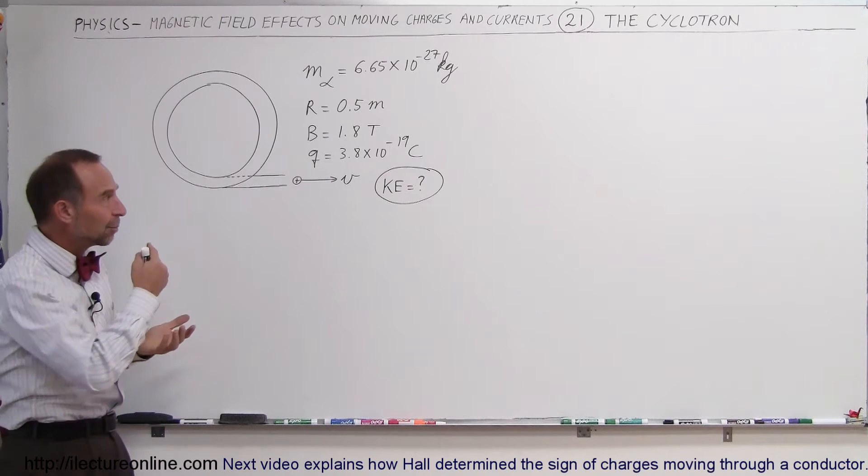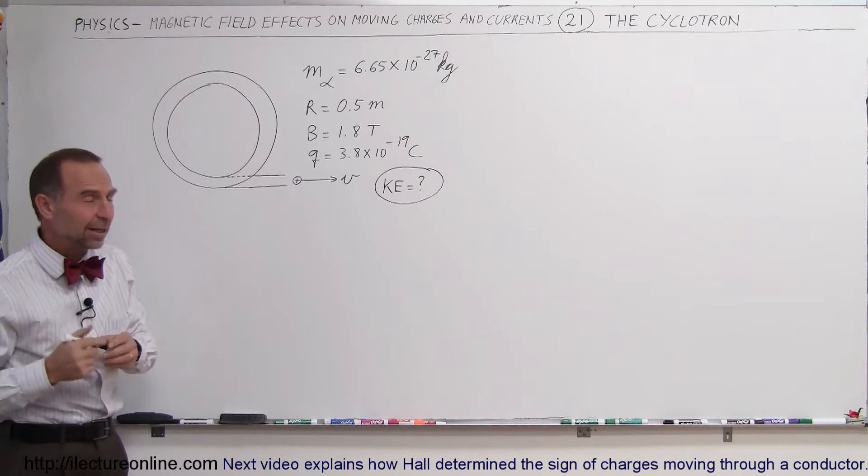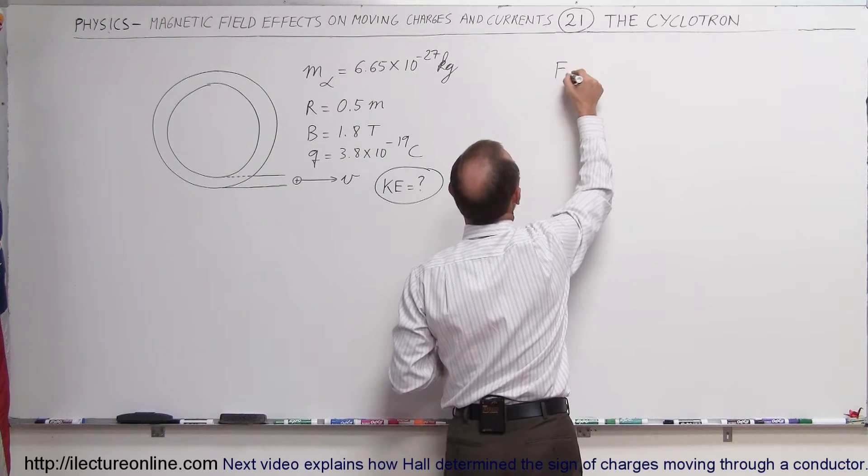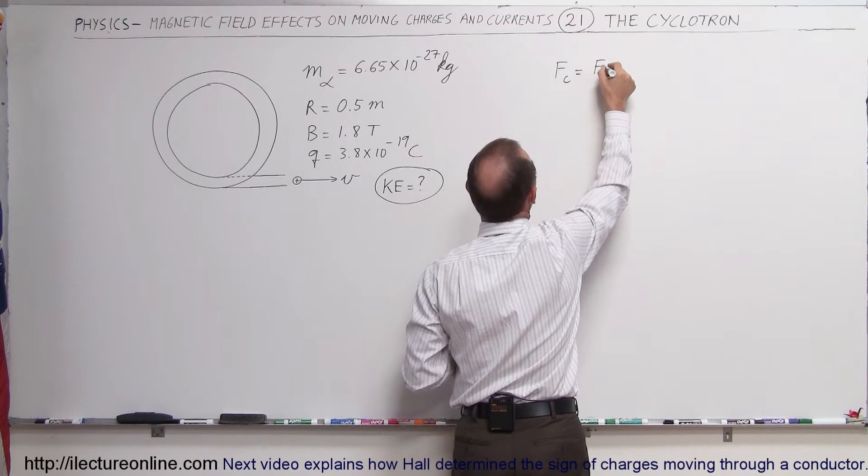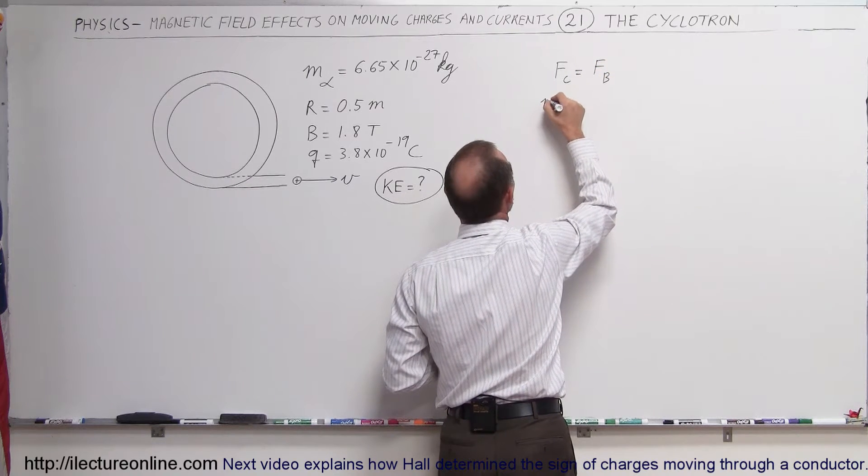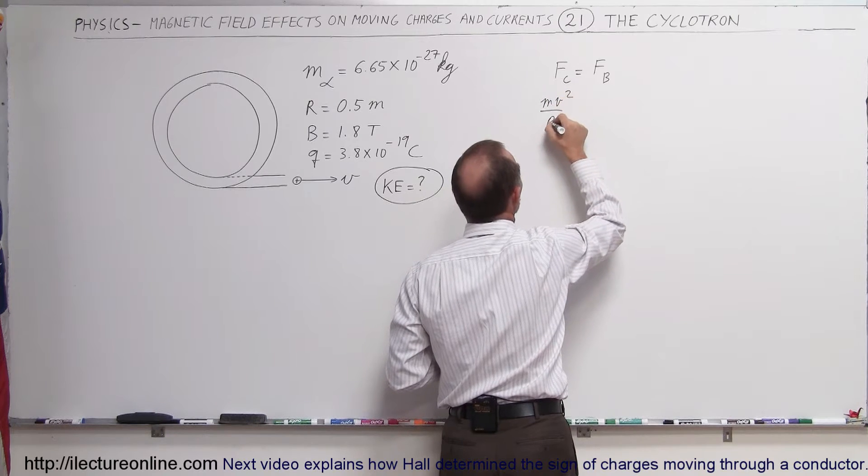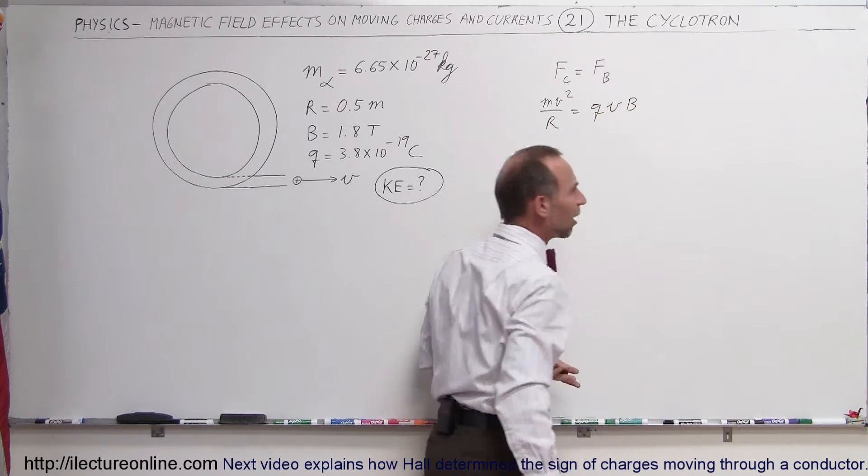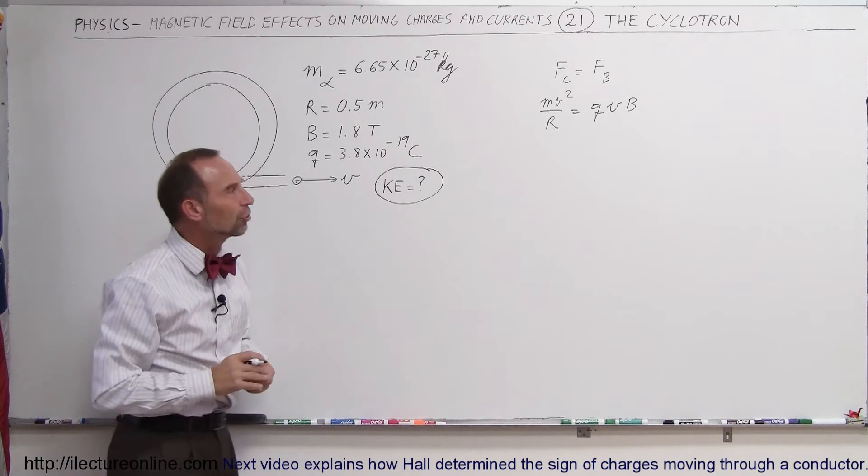The principle here is again that they'll be moving around in circles in a magnetic field, which means that the centripetal forces must be equal to the forces caused by a magnetic field. So we can say that mv squared over r is equal to qvb, which is the force caused by a magnetic field on a moving charge.